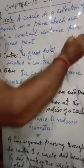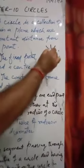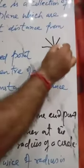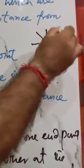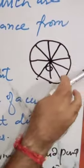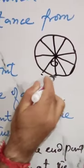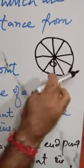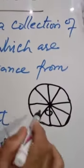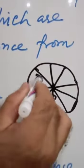That is a constant distance. So these distances are called radius of the circle and the fixed point. This fixed point is called center of the circle. This is a constant distance which is called radius.